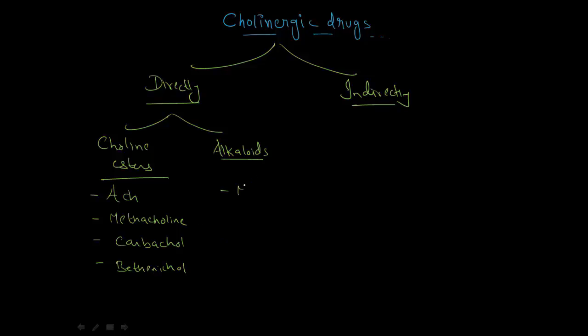For alkaloids, the first drug is muscarine, the second is pilocarpine, and the third is arecoline, but it's not of much importance. In fact, none of the cholinesters are widely used because better drugs are available. For indirectly acting drugs, they inhibit cholinesterase, so they're called anticholinesterases. We'll have a separate video for those.